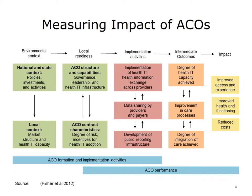The second column to the right lists three important intermediate outcomes of ACOs: the degree of health information technology achieved, the improvement in care processes, and the degree of care integration achieved. To achieve the desired impact, ACOs will need to implement health information technology and health information exchange, achieve robust data sharing by providers and with payers, and develop the infrastructure to support public reporting on quality and spending performance.